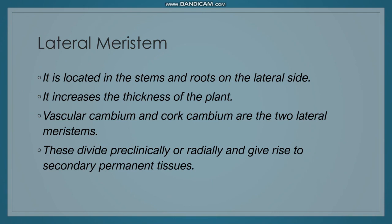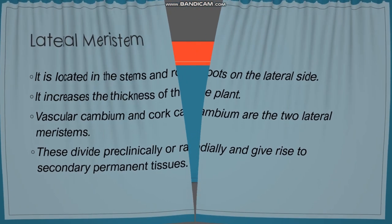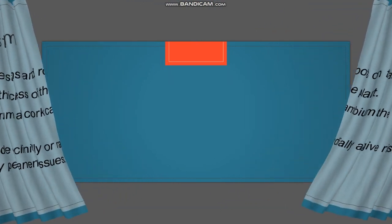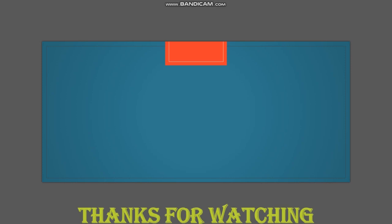Lateral meristem includes vascular cambium and cork cambium. These divide radially and give rise to secondary permanent tissues. Thanks for watching this video.